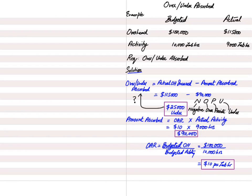To summarize: two simple formulas cover over and under absorption. Over-absorbed means more overhead has been charged to products than actually should have been. Under-absorbed means less overhead has been charged to products than should have been. Neither is better — both have serious issues whether we over-absorb or under-absorb overhead.